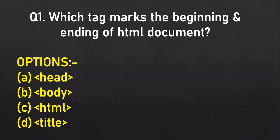This question is for the offline class: which tag marks the beginning and ending of an HTML document? Start one by one, all of you will get the chance. The answer is C option — HTML tag. You can see the correct option color has changed. Whichever is the correct answer, it will get zoomed, the color will change, or both.